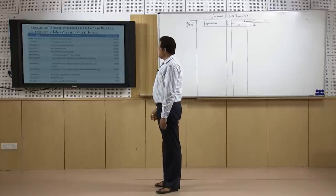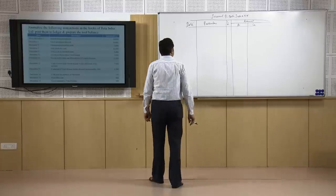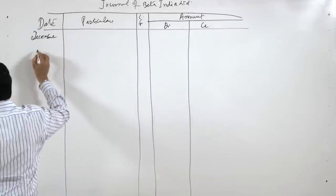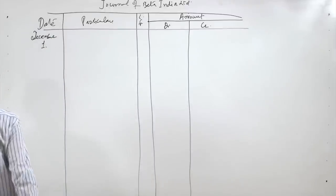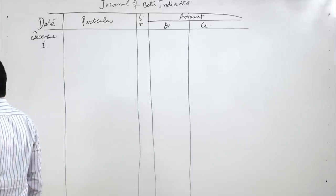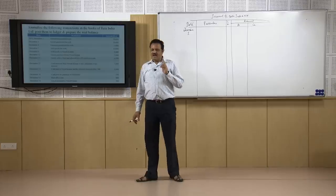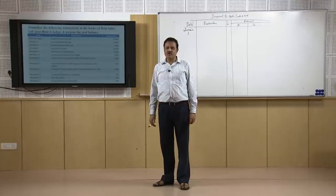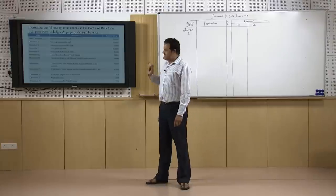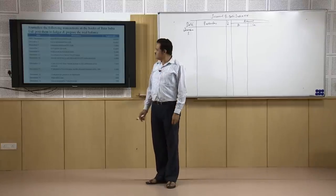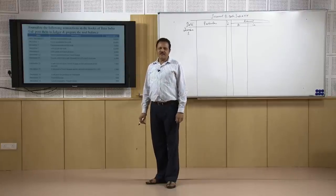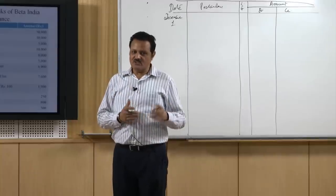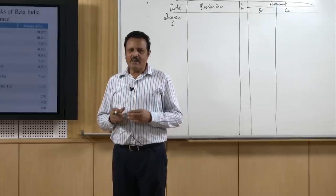We will start with the first transaction: started business with cash. In this case you put the date — we will put the month December and the first transaction date is December 1. Now we will record this transaction under the particulars column. As I told you, every transaction has a two-fold effect because of the double entry accounting system. So in one transaction there can be many accounts; for maximum there can be 4 accounts, but we have to identify the 2 best accounts. In this transaction there are only 2 accounts — you have to identify them: started business with cash.